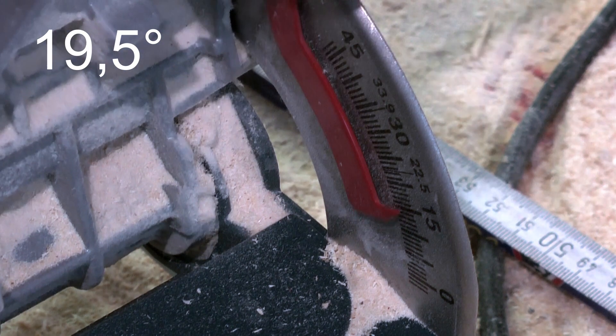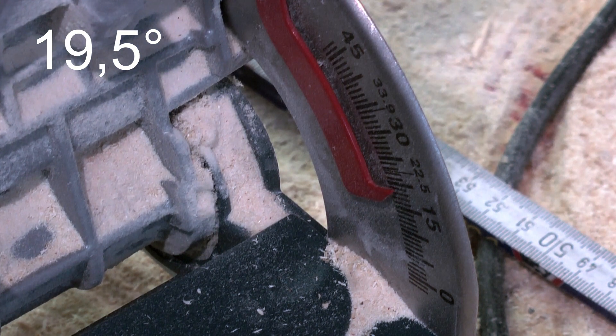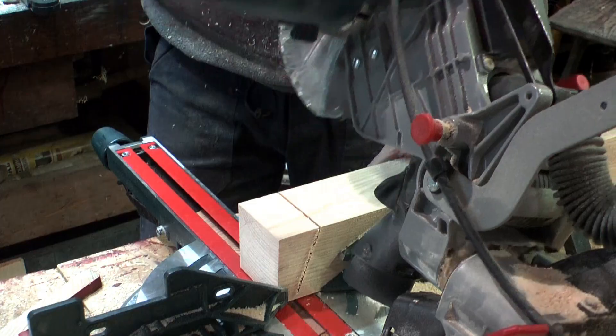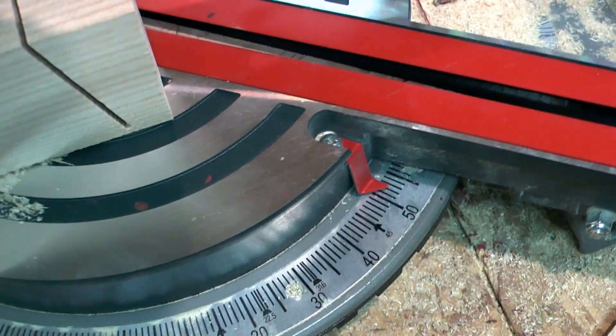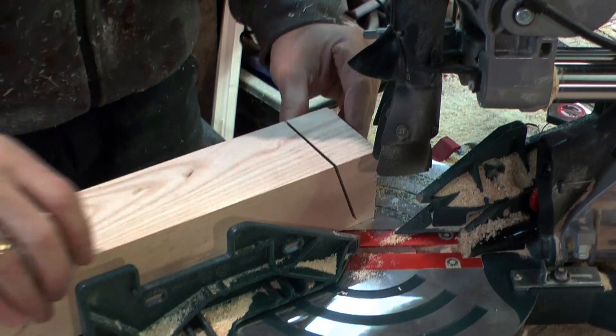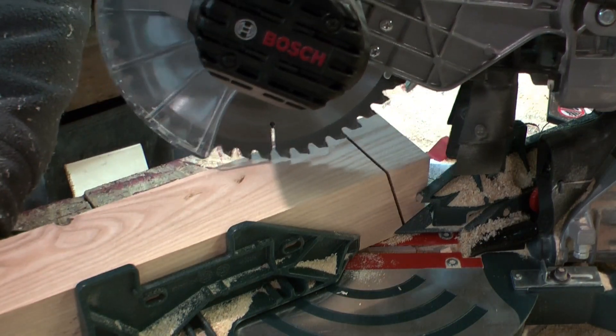So the blade of the mitre saw is tilted by 90 degrees minus 70.5 degrees and three cuts are made. These cuts are rotated by 60 degrees from each other.